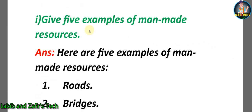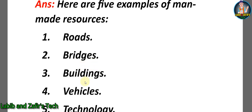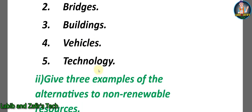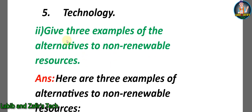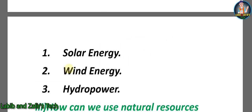Short question answers. Number one: Give five examples of man-made resources. Answer: 1) Roads, 2) Bridge, 3) Buildings, 4) Vehicles, 5) Technology. Second question: Give three examples of alternatives to non-renewable resources. Answer: 1) Solar energy, 2) Wind energy, 3) Hydropower.